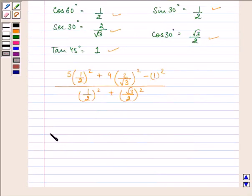Proceeding further, we have the value as 5 into 1 by 2 square is 1 by 4. So we have 5 by 4 plus 4 into the square of 2 by root 3 is 4 by 3. So we have 4 multiplied by 4 by 3 gives us 16 by 3 minus the square of 1 is 1 upon square of 1 by 2 is 1 by 4 and the square of root 3 by 2 is 3 by 4.